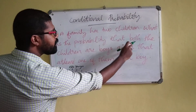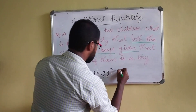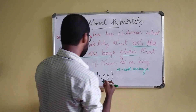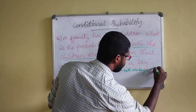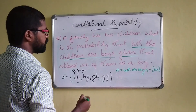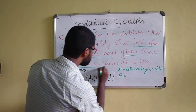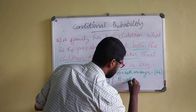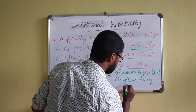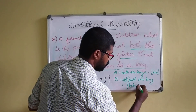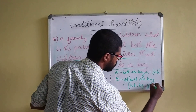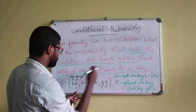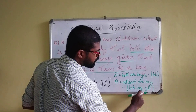Let event A be both children are boys, so A = {BB} — only one sample point. Let event B be at least one of them is a boy, so B = {BB, BG, GB} — three sample points. The condition given is that at least one child is a boy.